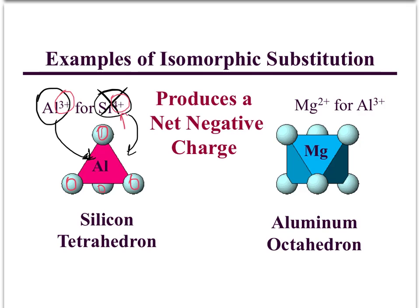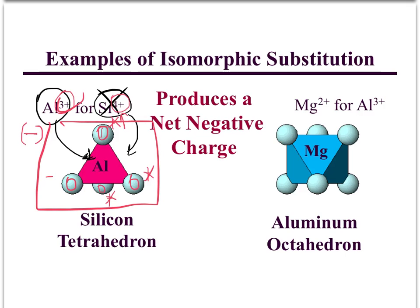When silicon was in the tetrahedron, all four oxygens were satisfied with the four positive charges — everybody was happy. Now when we put aluminum in there, we have three positive charges but four negative charges from the oxygens. Three of those oxygens are satisfied, but one of them doesn't have a positive charge to match up with it. So all of a sudden this tetrahedron takes on a negative charge.